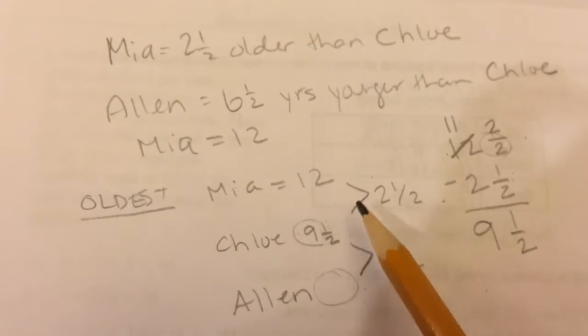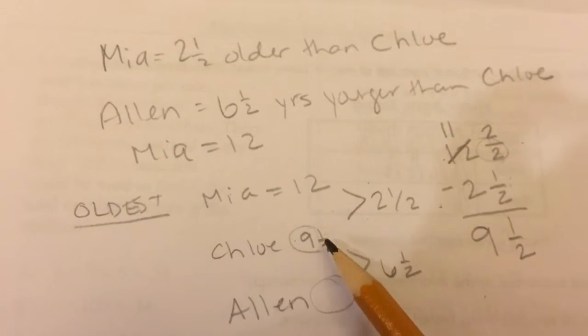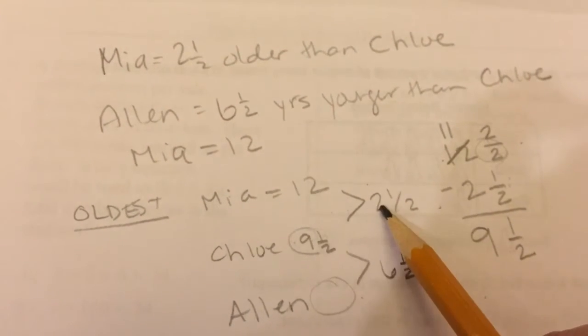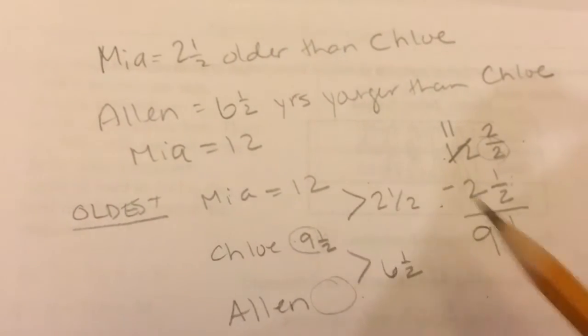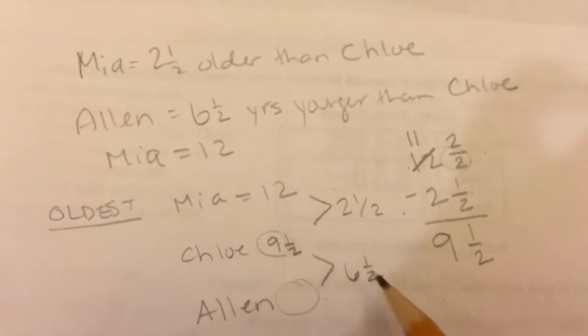So Chloe is 9½. And if I went back and double checked, a half plus a half is a whole, 9 plus 2 is 11, 11 plus that whole gives me 12. So far so good.